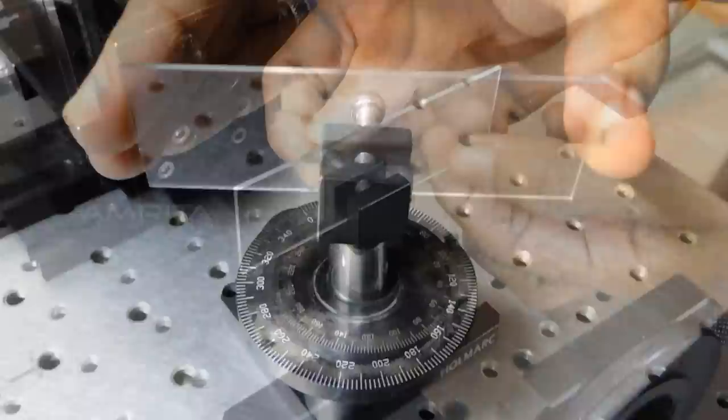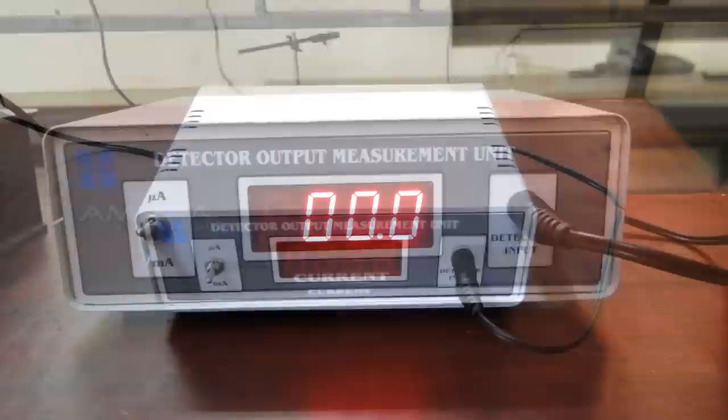Mount the glass plate on the rotational stage. Orient the glass plate to reflect the laser beam back into the laser output aperture. Rotate the glass plate slowly. Note the intensity of the reflected beam from the glass plate by a photodetector.